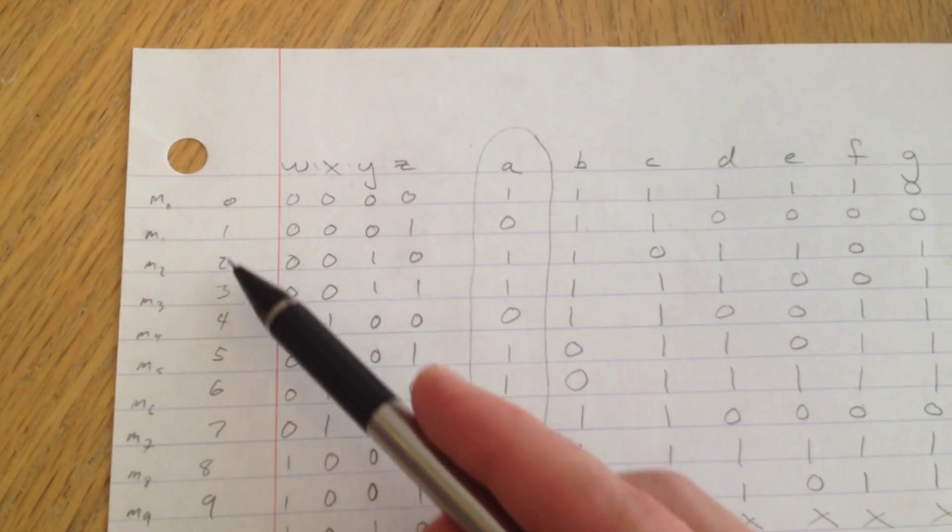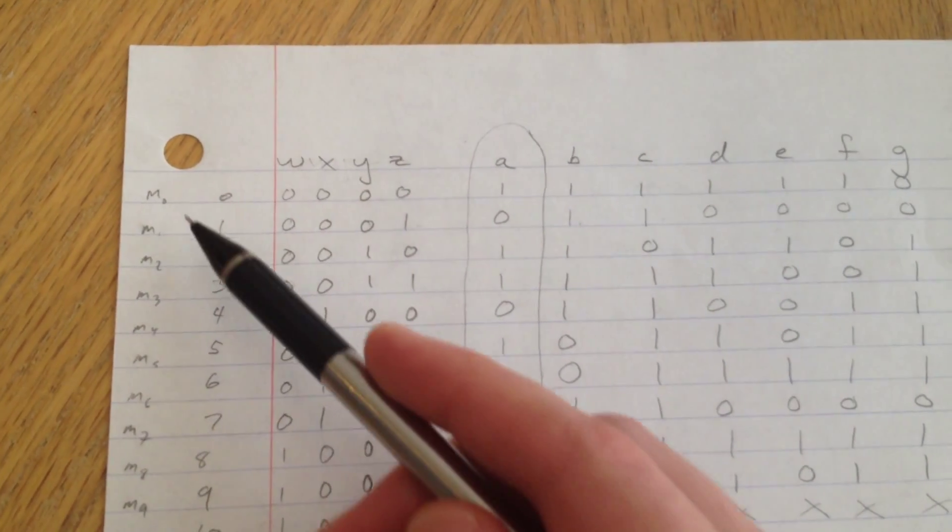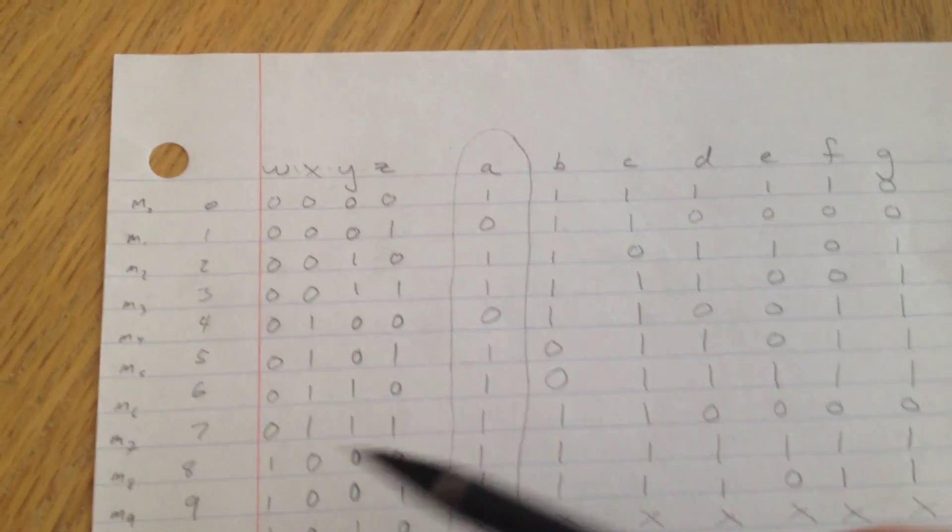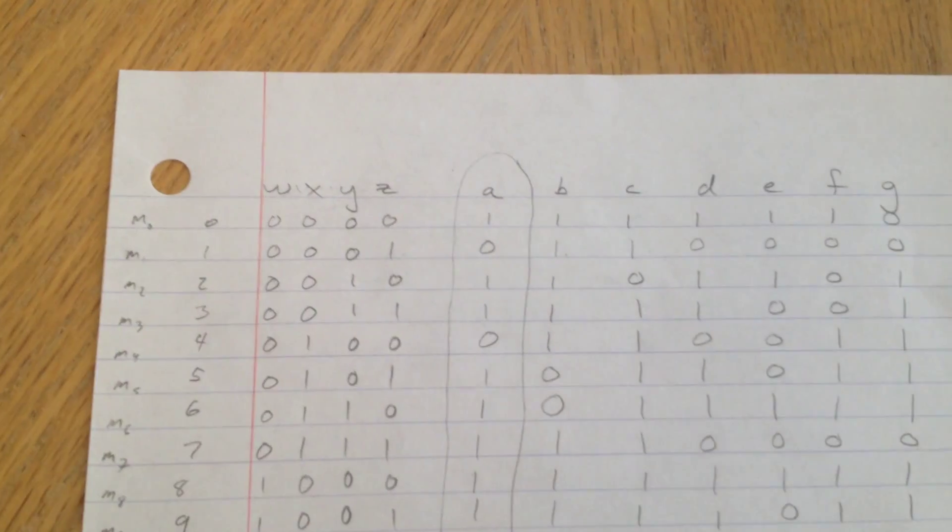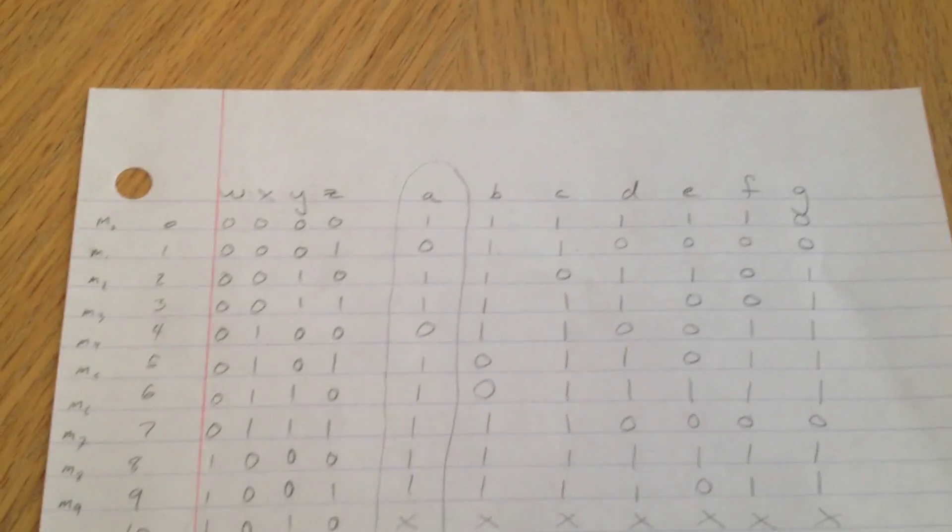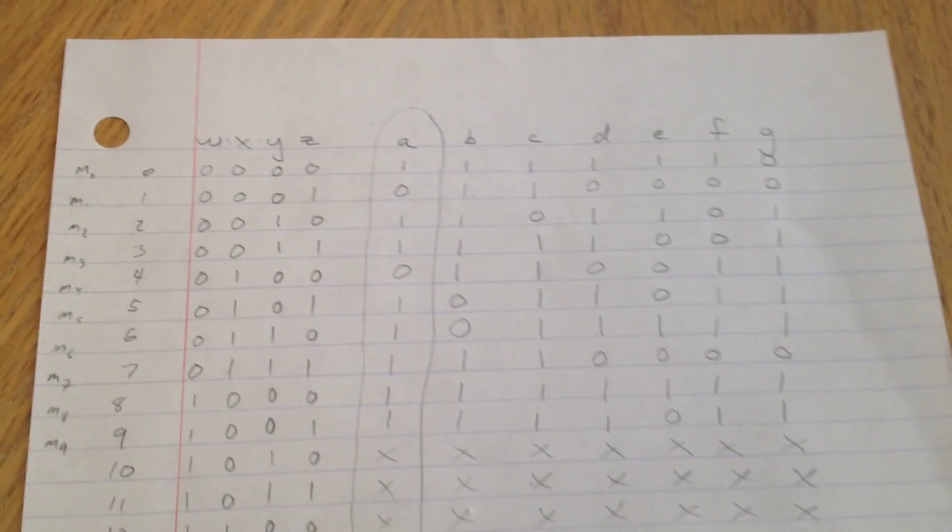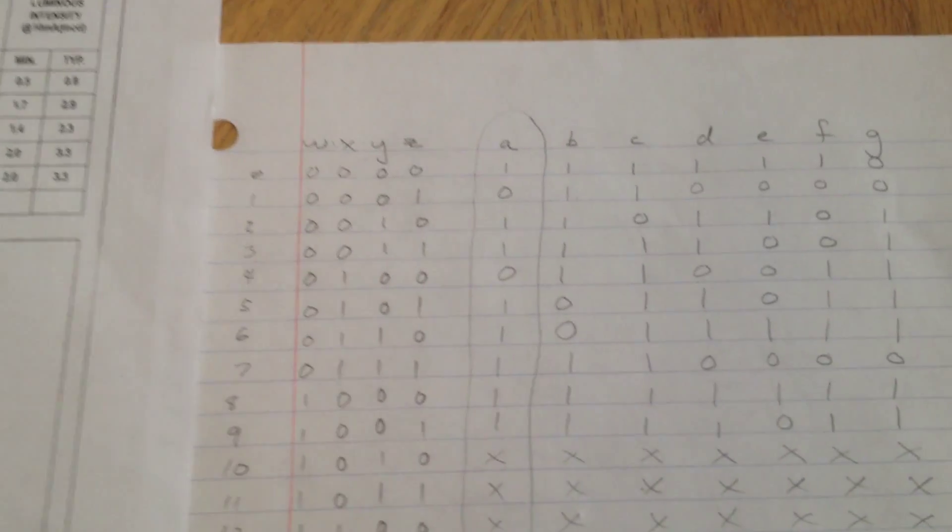Here are the decimal representations of the numbers. And I put them in terms, labeled them in terms. So just to give you an idea of how you can decode this or how you can map the binary value to the display. Take, for example, minterm one.